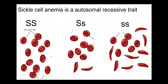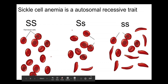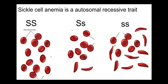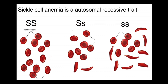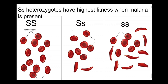We use sickle cell anemia as an example. Sickle cell anemia is an autosomal recessive trait. Big S big S is normal blood; little s little s has sickle cell anemia. The heterozygote big S little s has a mix of normal and abnormal phenotypic cells — not actually how the phenotype displays, but that's the symbol I'll use. The SS heterozygote actually has the highest fitness when malaria is present.